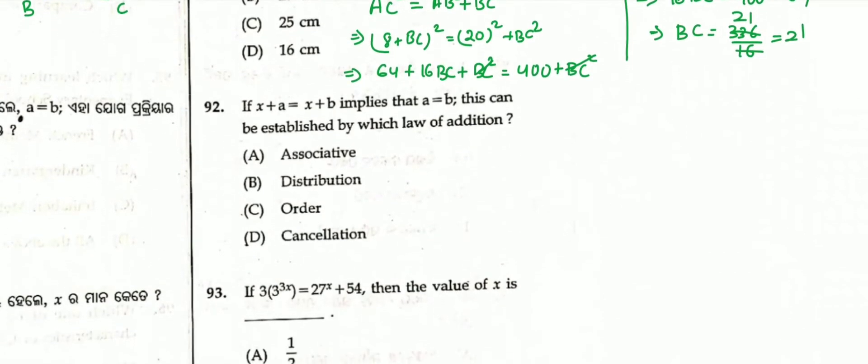Question number 92: If x + a = x + b implies a = b, this can be established by which law of addition? The answer is the cancellation law of addition.